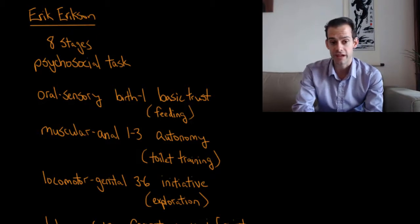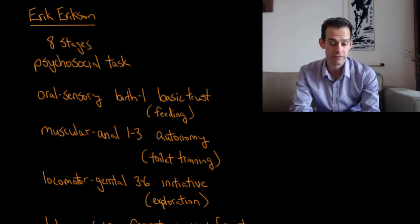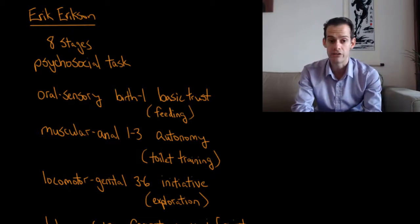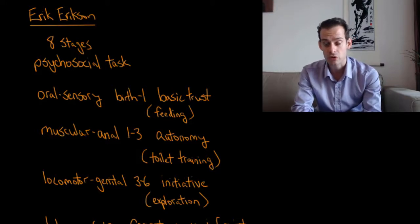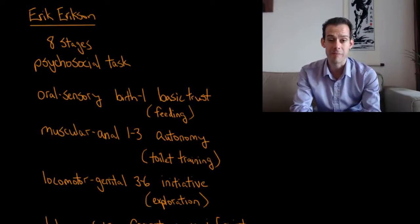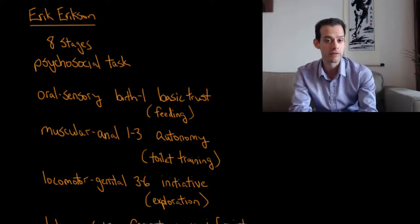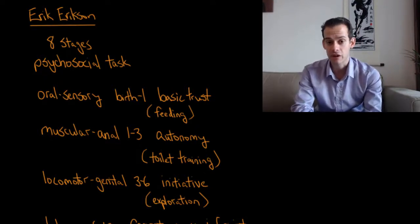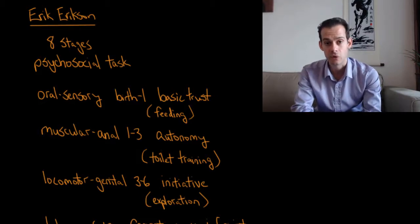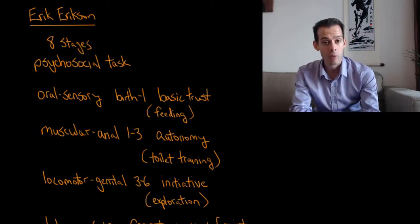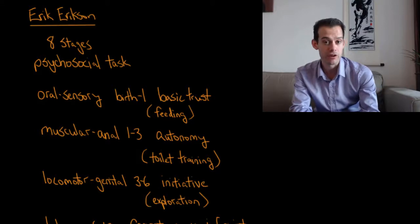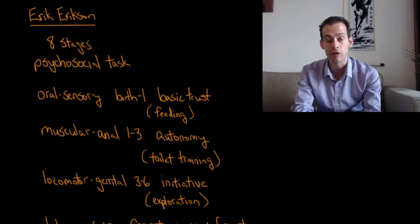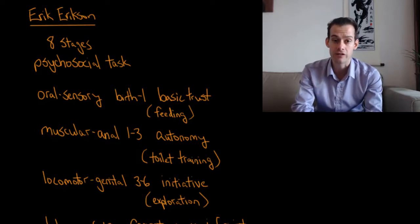We'll begin with the first stage which is called the oral sensory stage. This should remind you of Freud's oral stage. The main psychosocial task here is developing a sense of basic trust. This lasts from birth to about age one. The main way that Erikson thought we developed trust relates to feeding. We can think about whether or not we're going to be fed. Can we trust our caregiver to provide for us? Because we're vulnerable, we're very helpless at this age. We need to learn to trust somebody else that they will help to take care of us.